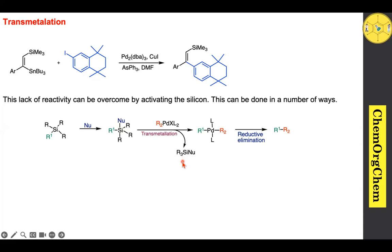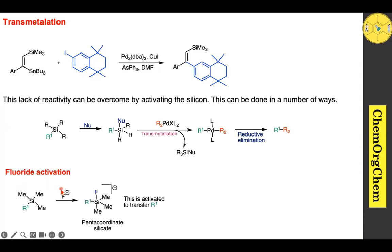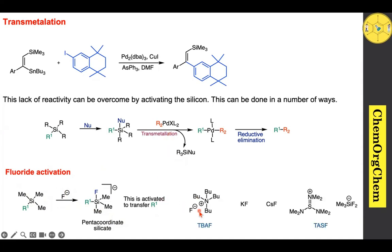The first activation method is fluoride activation. The silyl substrate reacts with fluoride ion sources to produce a penta-coordinate silicate, which is then ready to transfer the R1 group to the palladium species. Fluoride ion sources include tetrabutylammonium fluoride (TBAF), potassium fluoride, cesium fluoride, and TASF.